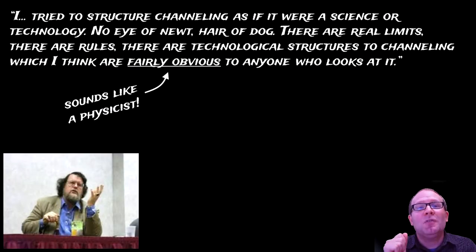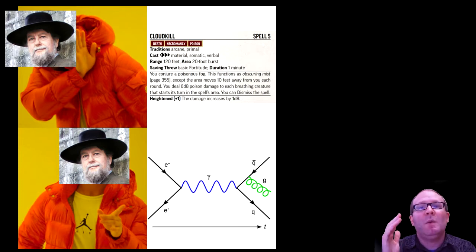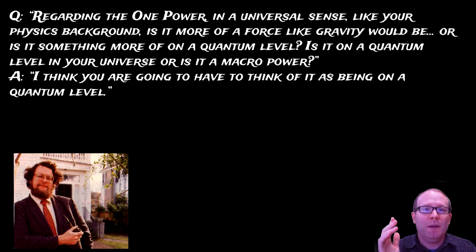Robert Jordan once said, I tried to structure channeling as if it were a science or technology. No eye of newt, hair of dog. There are real limits. There are rules. There are technological structures to channeling, which I think are fairly obvious to anyone who looks at it. So in Jordan's mind, channeling is much more of a physical phenomenon than what we usually think of as magic. In an interview at DragonCon, Jordan was once asked,